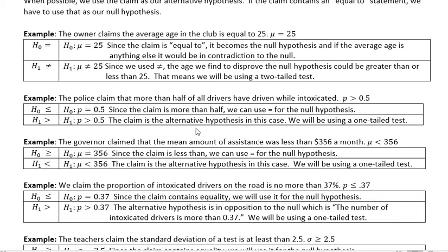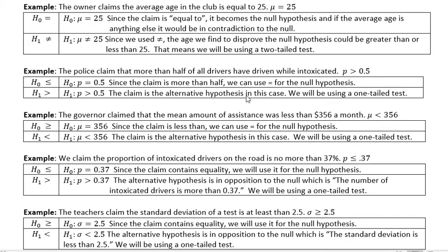Second example. The police claim that more than half of all drivers have driven while intoxicated. So they didn't give us a number here, but when we're saying more than half, we know half is 0.5, and this is a proportion, so I'm using P rather than mu. So we know that the claim is greater than 0.5. So in that case, because it doesn't have an equal to part in it, that is our alternative hypothesis. When our alternative hypothesis is greater than, then the null hypothesis is less than or equal to. But for us, in this class, we're going to change that just to equal to, because all of those are going to have just the equal to part. So the claim is the alternative hypothesis. We're going just in one direction here, so we'd have a one-tailed test.